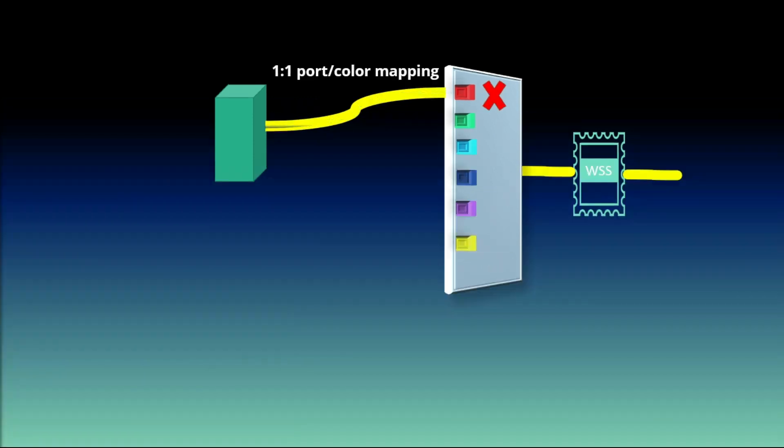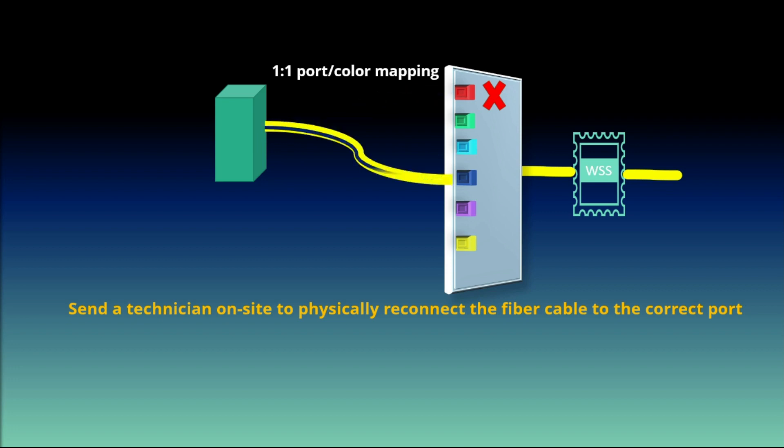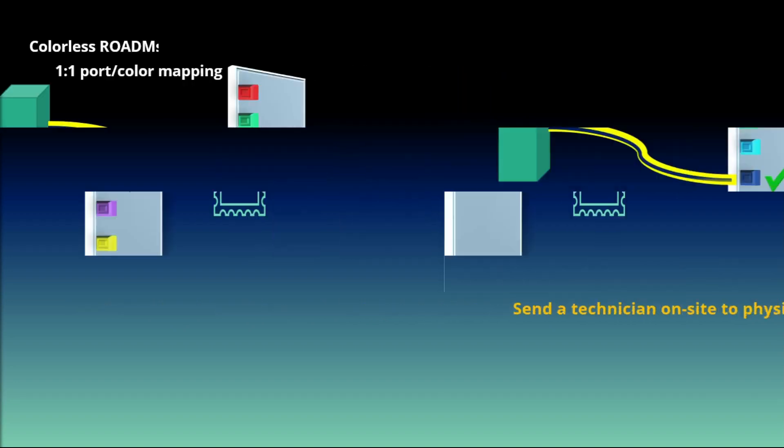Because of the one-to-one port or color mapping, the service provider still had to send a technician on-site to physically reconnect the fiber cable to the correct port. In order to restore signal flow, still need more enhancement towards complete automation.